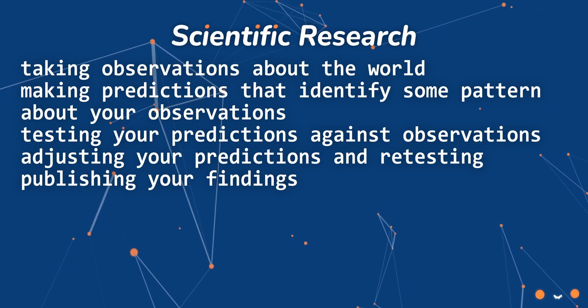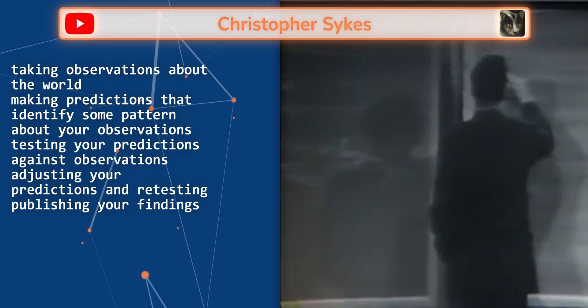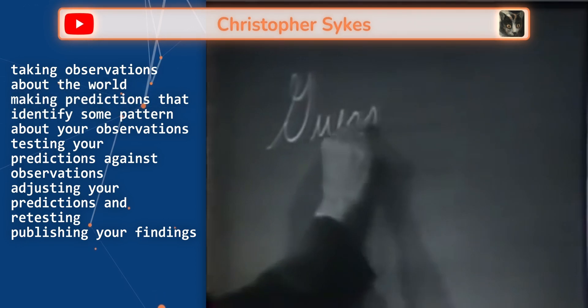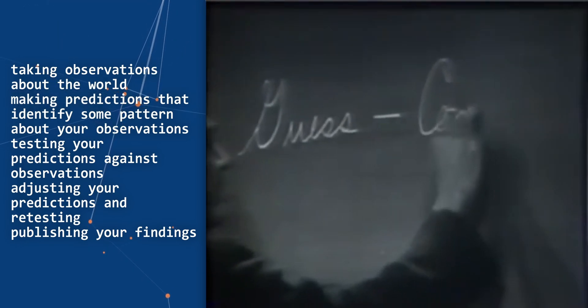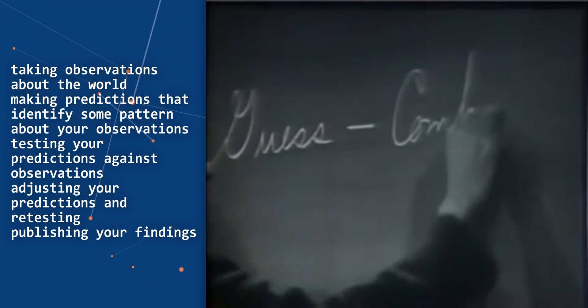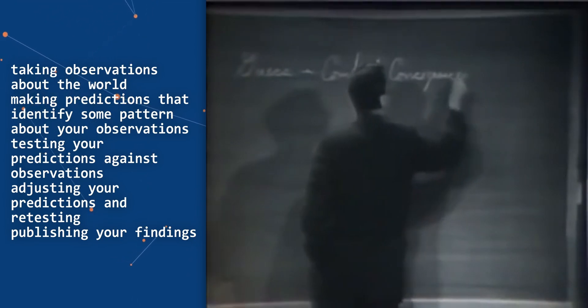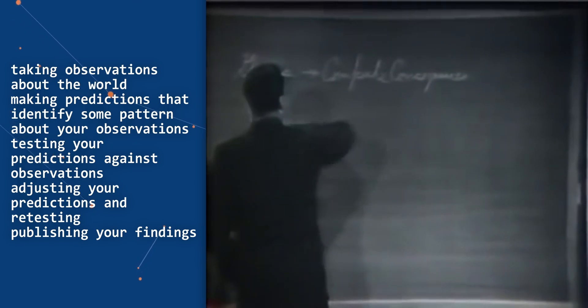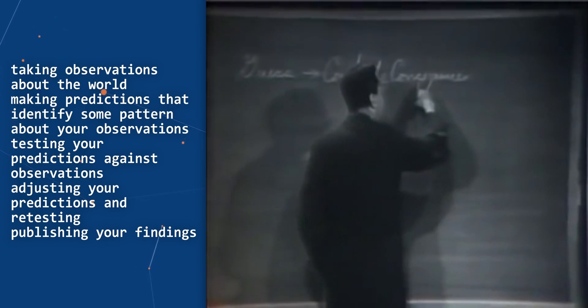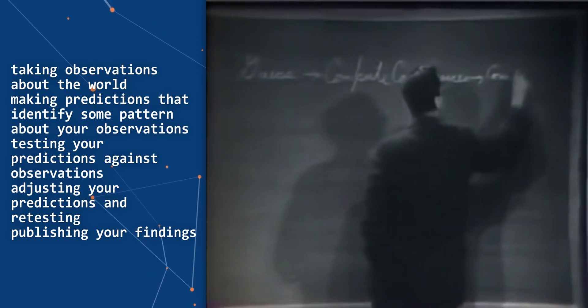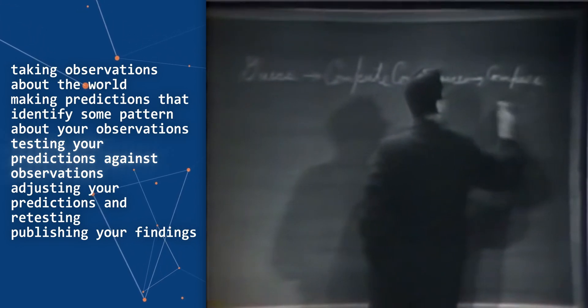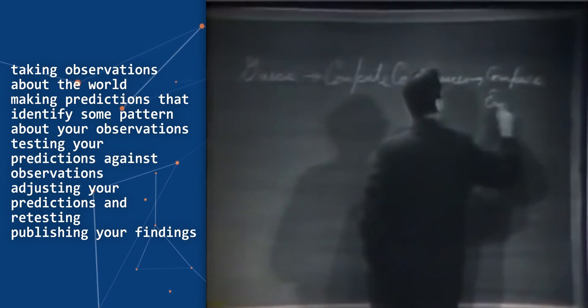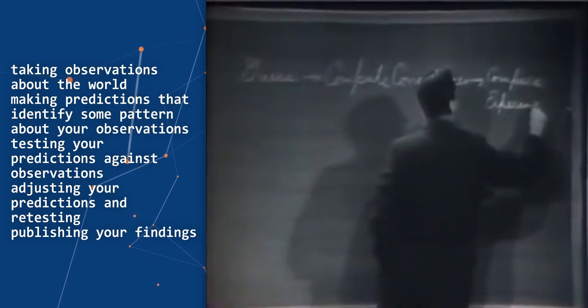It is important that you decide what stage of the process you're in. In general, we look for a new law by the following process. First, we guess it. That's really true. Then we compute the consequences of the guess to see what, if this law that we guessed is right, what it would imply. And then we compare those computation results to nature, or we compare to experiment or experience — compare it directly with observation to see if it works.